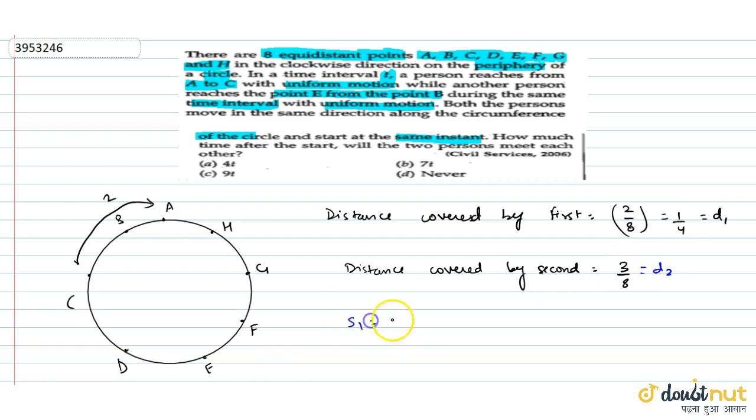Toh speed of the first person kitna hoogai? D1 upon time T that is 1 upon 4T and speed of second person hoogai D2 upon time T that is 3 upon 8T.